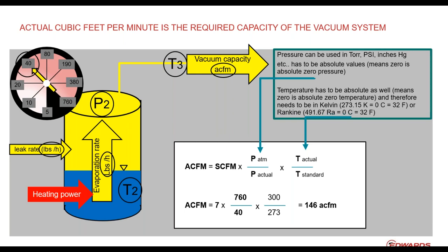ACFM equals 7 SCFM times (760 ÷ 40). Remember, 40 Torr is the vapor pressure of IPA at the temperature I picked — that's the best pressure you can accomplish, so both the evaporation rate and leak rate take the volume at that pressure. You can use absolute values in any unit — psi, inches of mercury — as long as you stay in absolute values, the ratios stay the same. For temperature, you must also use absolute values: Kelvin or Rankine. 273 K equals 32°F. Watch out for that — it's important.